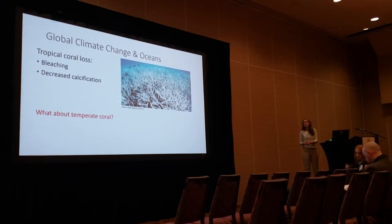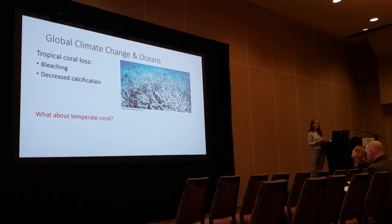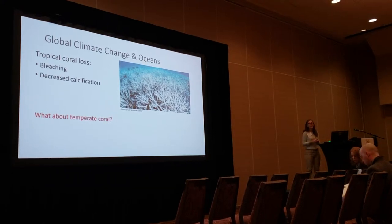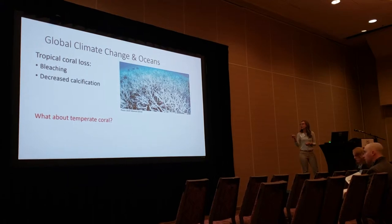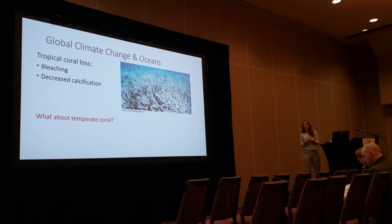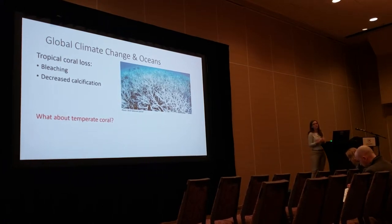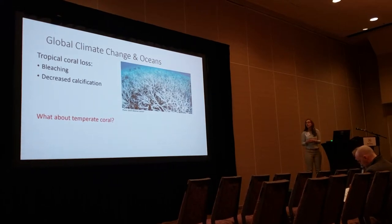We are seeing tropical coral loss around the world due to bleaching, which is caused by an increase in ocean and sea temperatures. This image shows a bleaching event in the Great Barrier Reef that has been widely publicized. We've also had the problem of ocean acidification, which is causing decreased calcification, also affecting many tropical corals.